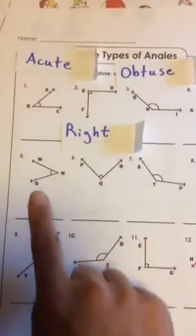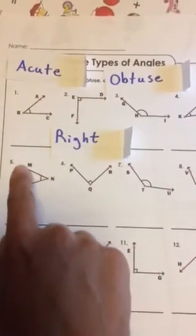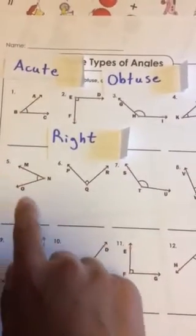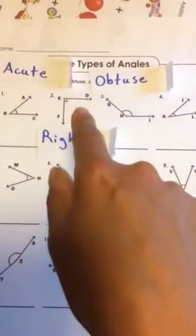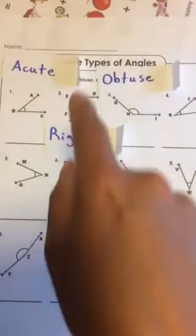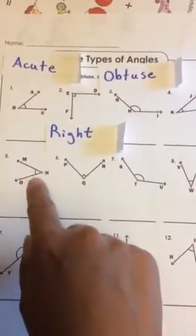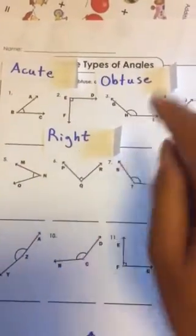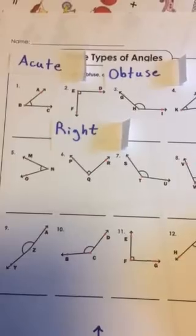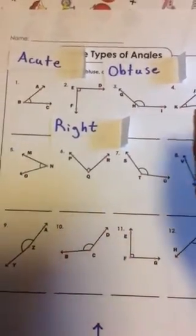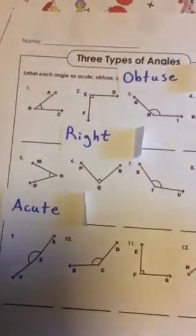Let's look at number five. This one's called M-N-O — that's the name of it. Does this one look like it could fit inside the right angle, or could the right angle fit inside this one? What do you think, guys — is this one acute, right, or obtuse? You guys are right — that one is also acute.